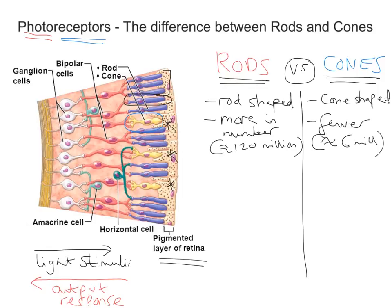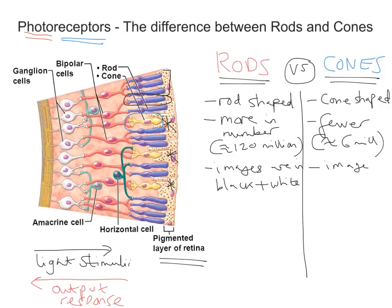The thing about rods is that they cannot distinguish between different wavelengths of light, so they actually produce images in black and white. If we compare and contrast that with cones, there are actually three types of cone, and each one responds to a different wavelength of light. So images can be seen in full colour, depending on the proportion of cones stimulated. It's what's known as the trichromatic theory — you can stimulate the red, the green, and the blue cone, and the extent to which we stimulate all of those will determine the colour we ultimately detect. So images for rods are seen in black and white, whereas for cones they are seen in colour.